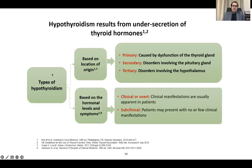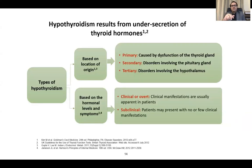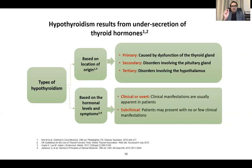We can divide the types of hypothyroidism based on location of origin or hormonal levels and symptoms. Based on location: primary, most commonly caused by dysfunction of the thyroid gland; secondary, involving the pituitary; or tertiary, involving the hypothalamus — the latter two both called central hypothyroidism. Based on severity: overt hypothyroidism has clinical manifestations with T4 below the lower normal limit and markedly elevated TSH, while subclinical has T4 in the normal range with TSH up to 10.